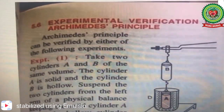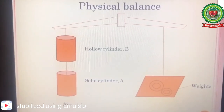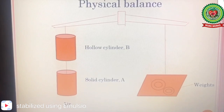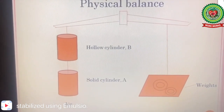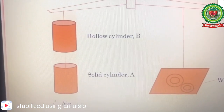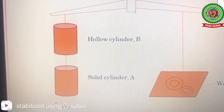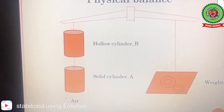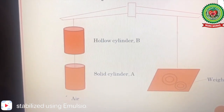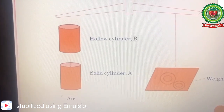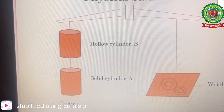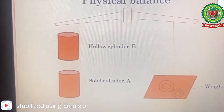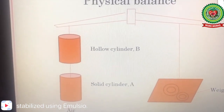Let us now discuss the experimental verification of Archimedes principle. In experiment one, we consider a physical balance, one hollow cylinder B, one solid cylinder A, and some weights. The two cylinders A and B are suspended from the left arm of a physical balance, with solid cylinder A below and hollow cylinder B above. To balance these two cylinders, some weights are kept on the right arm of the physical balance so that both cylinders in air are balanced.